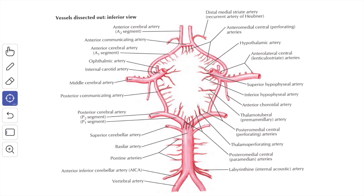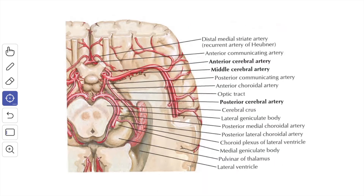The posteromedial group enters the posterior perforated substance to supply the thalamus, subthalamus, and hypothalamus. The posterolateral group arises from the posterior cerebral artery after it has curved around the cerebral peduncle, and they supply the thalamus including the geniculate bodies. In the diagram, the middle cerebral artery and the posterolateral central branches can be seen supplying the thalamus and the geniculate bodies.